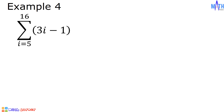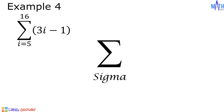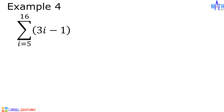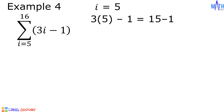Example number 4. Let us evaluate the summation of 3i minus 1 where i goes from 5 to 16. This is an example of sigma notation or summation notation. This symbol is called sigma, and it means we need to find the sum of 3i minus 1 where i goes from 5 to 16. We can determine the terms by substituting values 5 to 16 into 3i minus 1. If i equals 5, then 3 times 5 minus 1 equals 15 minus 1 equals 14. So 14 is the first term of the series.